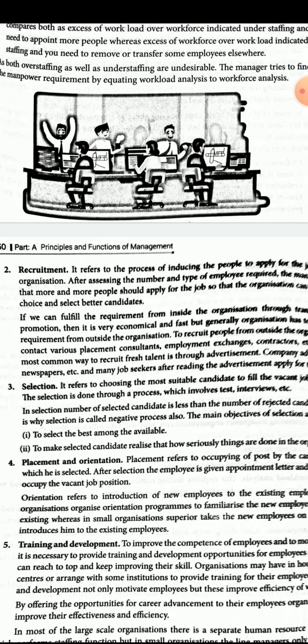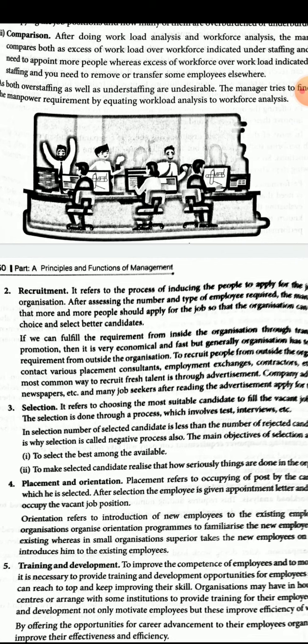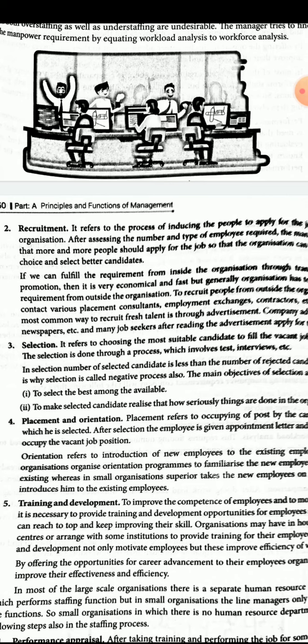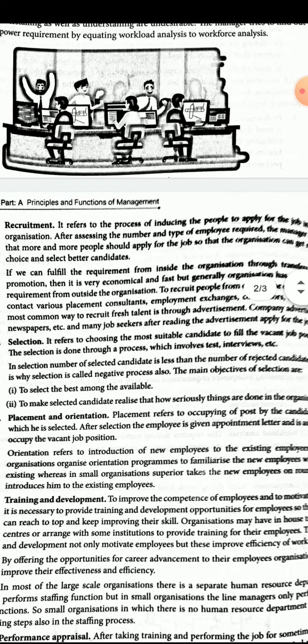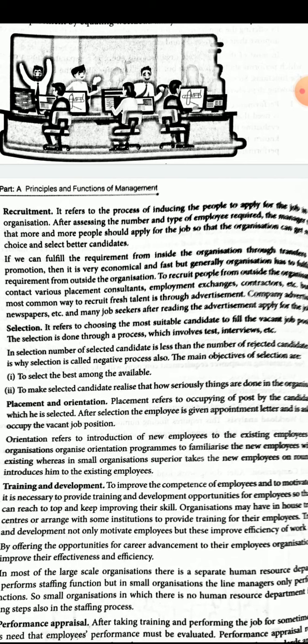The third step is selection. It refers to choosing the most suitable candidate to fill the vacant job position. The selection is done through a process which involves tests, interviews, etc. In selection, the number of selected candidates is less than the number of rejected candidates. That is why selection is also called a negative process. The main objectives of selection are: first, to select the best among the available candidates; and second, to make the selected candidate realize how seriously things are done in the organization.